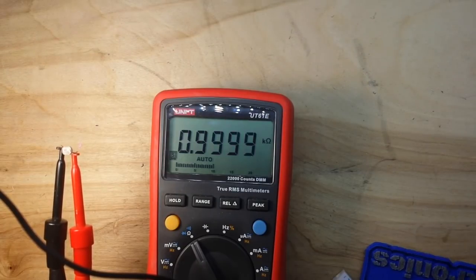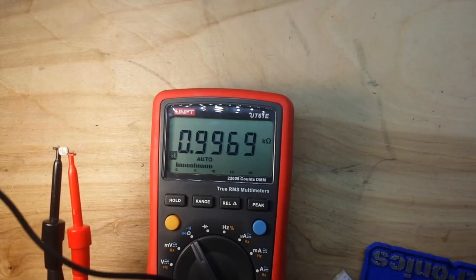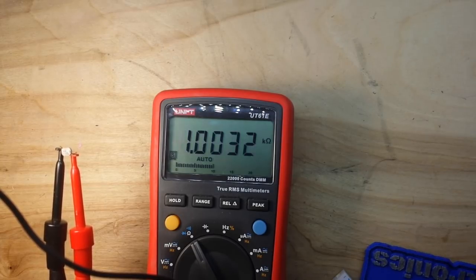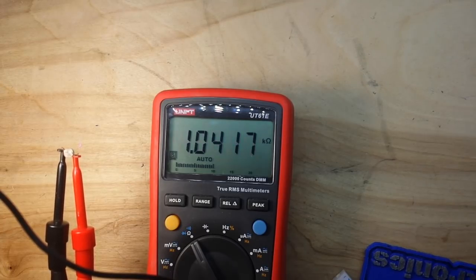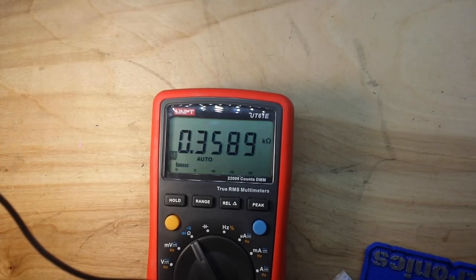All right, so we've got our LDR hooked up to the meter here in the resistance measurement, and you can see in the ambient table light here we're getting about 1k. Now if I move this into a brighter light...